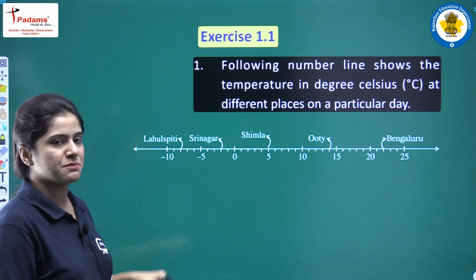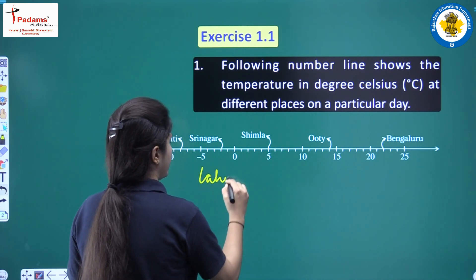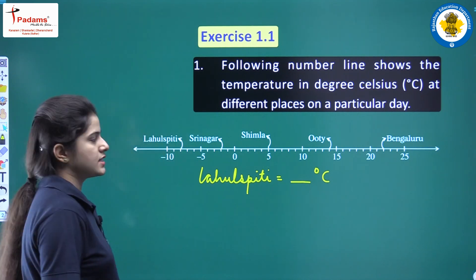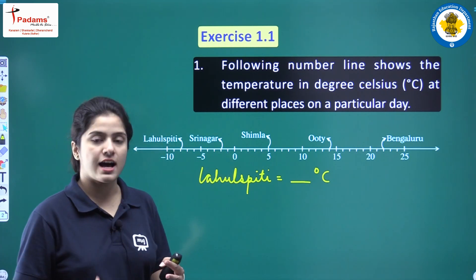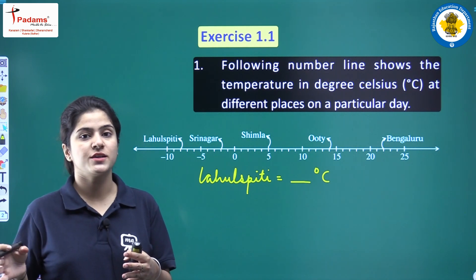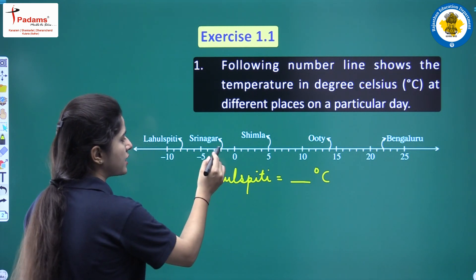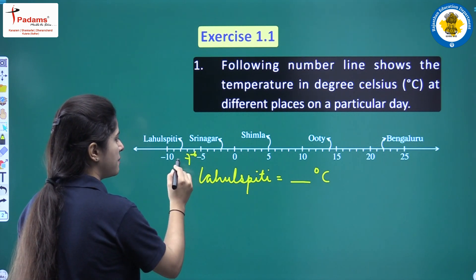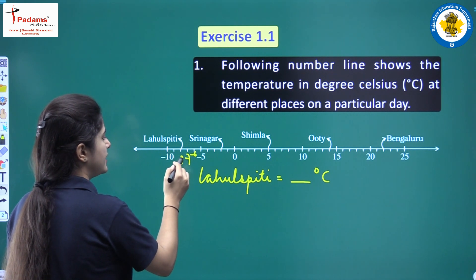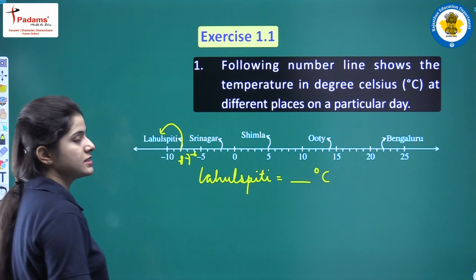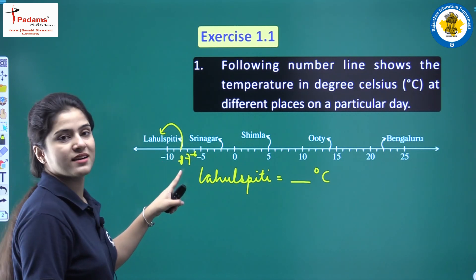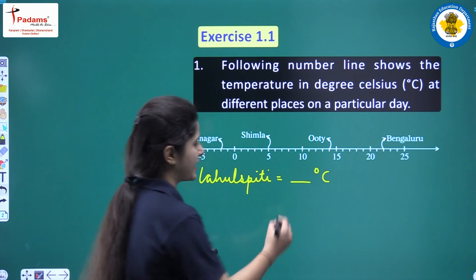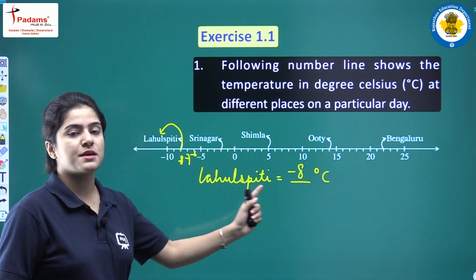Beginning with Lahulspiti. Clearly you can see Lahulspiti's temperature is in degrees Celsius. We are starting with 0. As discussed in the last class, numbers to the left side of 0 are negative numbers. So this is minus 1, minus 2, minus 3, minus 4, minus 5, minus 6, minus 7, minus 8. You can clearly see that minus 8 is the temperature of Lahulspiti. So the temperature of Lahulspiti is minus 8 degrees Celsius.